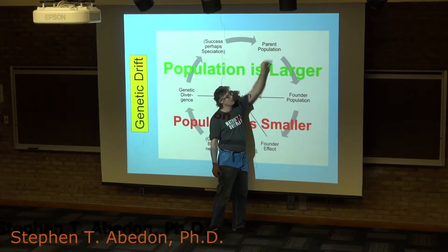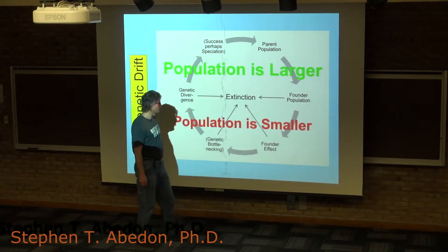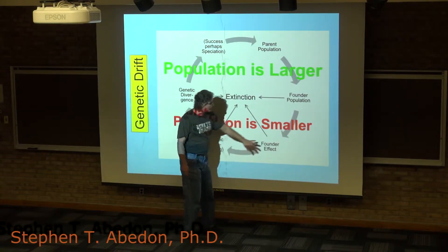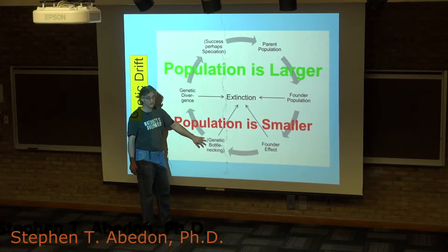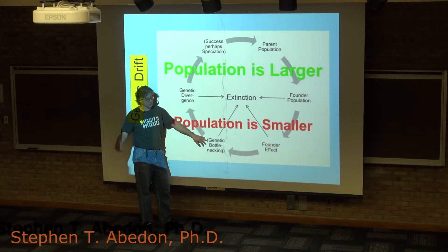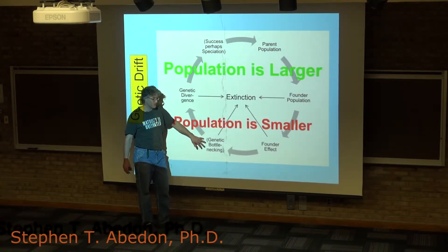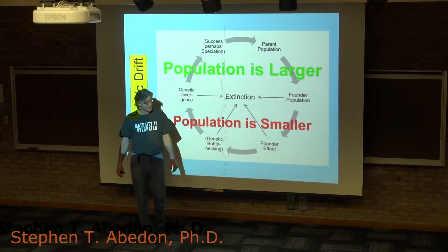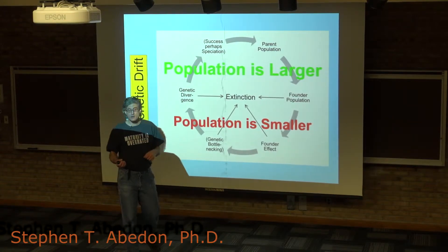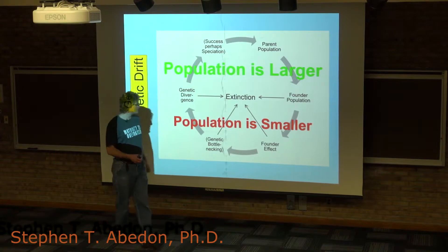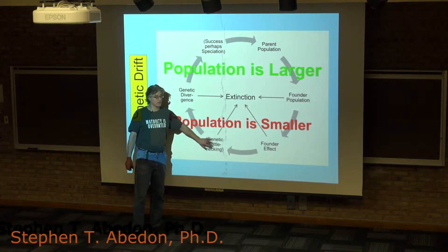If this founder population remains small over long periods of time, or even relatively short periods of time, multiple generations, then you have genetic bottlenecking which can further reduce the amount of genetic variation within the population.